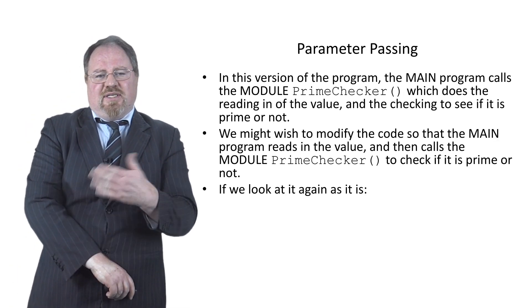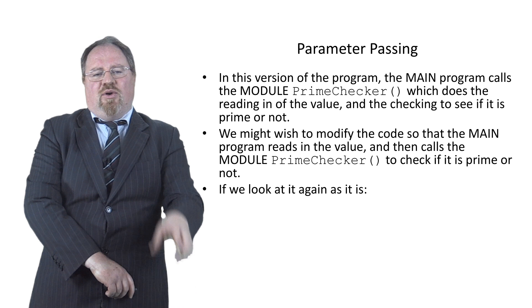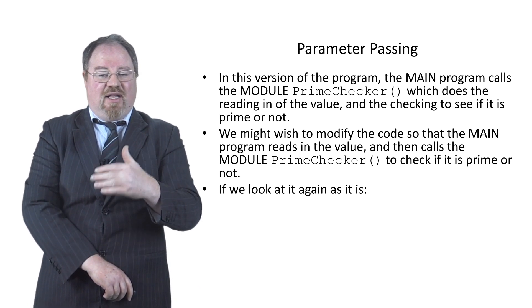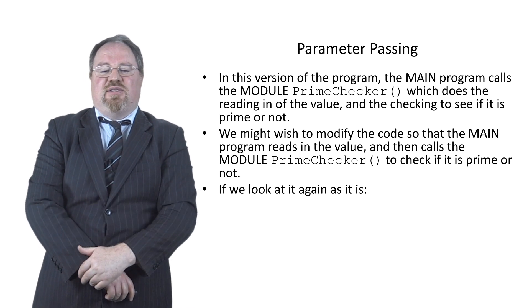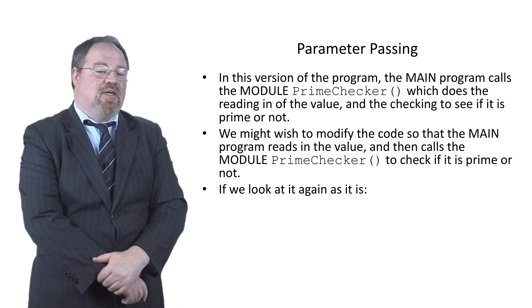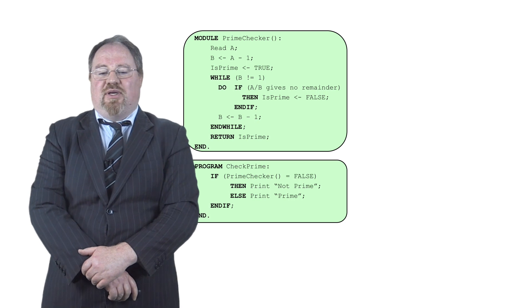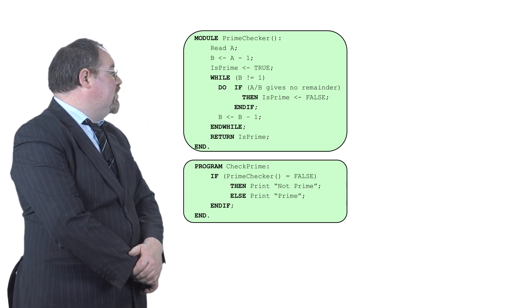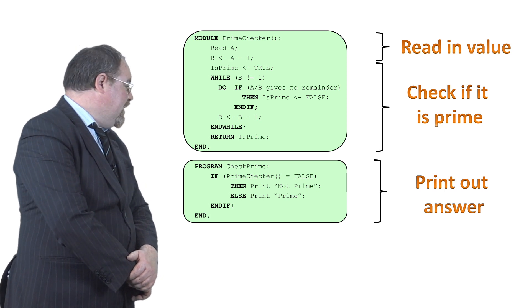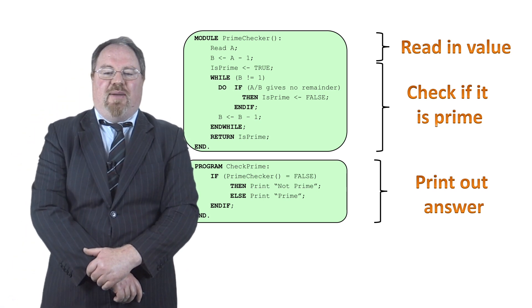In this version of the code, it is interesting the way it's broken up. One half of the code reads in the value and checks if that number is prime, and then the second half prints out the answer as to whether or not it's prime. So the module reads in a value then checks if it's prime, whereas the main program prints out the answer.